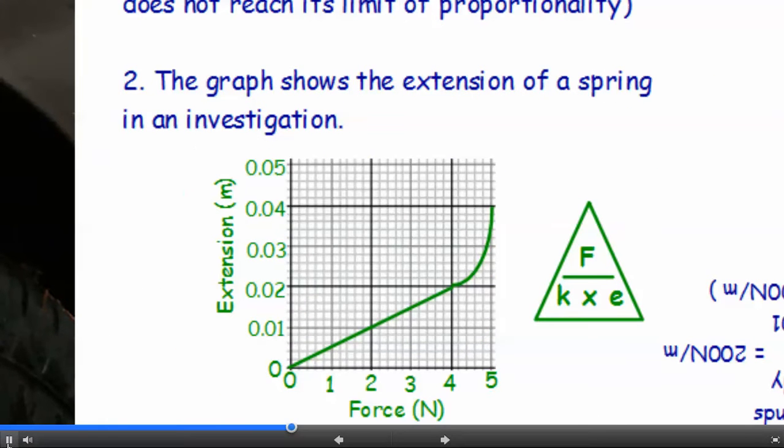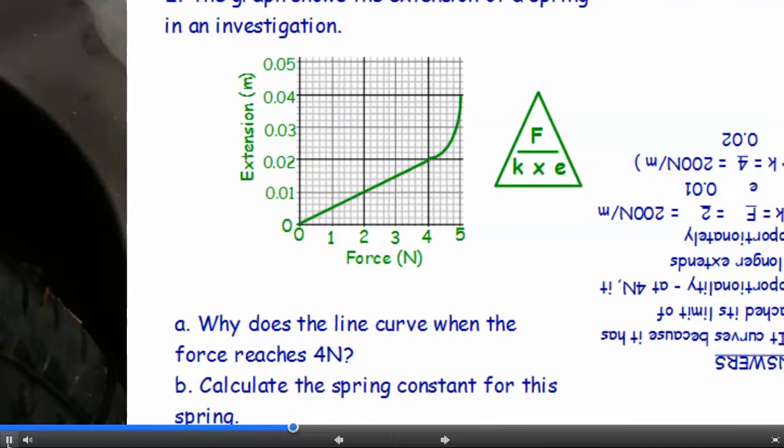Try this one. The graph shows the extension of a spring in an investigation. Why does the line curve when the force reaches 4 newtons? And secondly, calculate the spring constant for this spring.